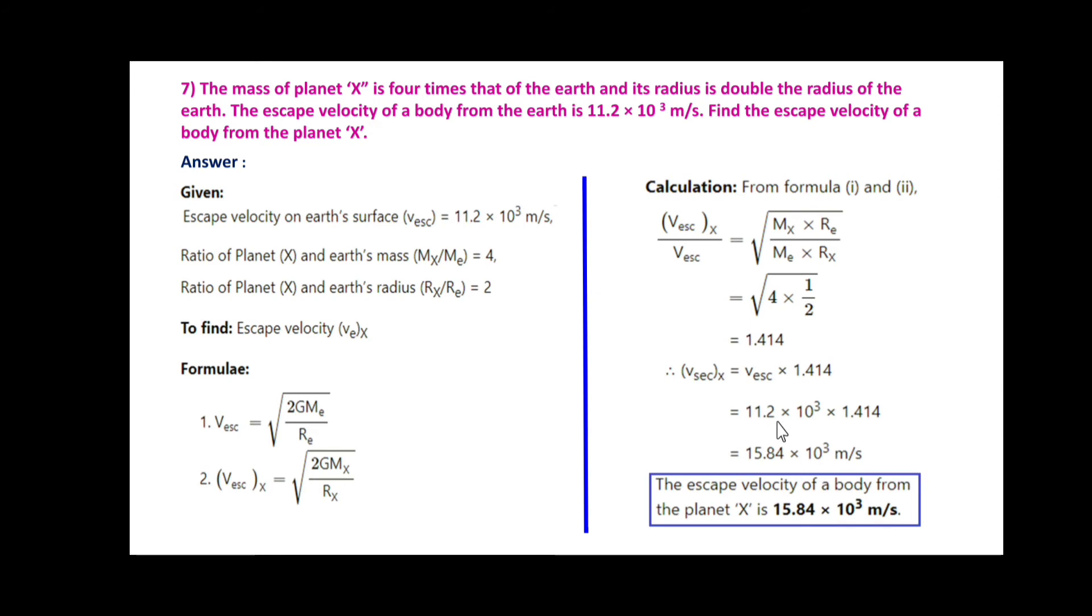VescapeX = Vescape × 1.414 = 11.2×10³ × 1.414. After calculating, you get 15.84×10³ m/s. The escape velocity from planet X is 15.84×10³ m/s.